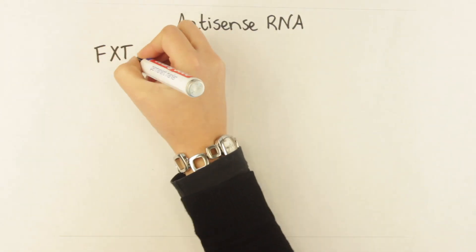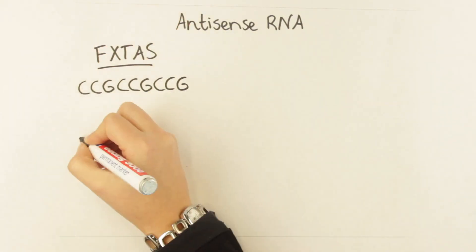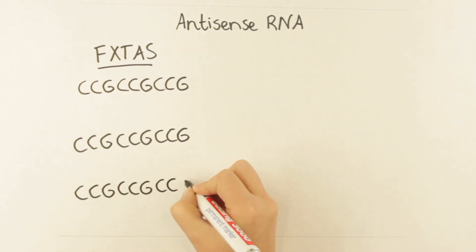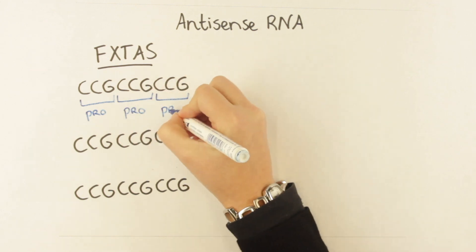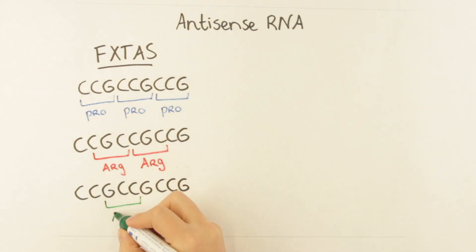CGG repeat for FXTAS is CCG from the antisense strand. Because again, we have different reading frames, RAN translation will result in three other proteins: polyproline, polyarginine, and polyalanine.